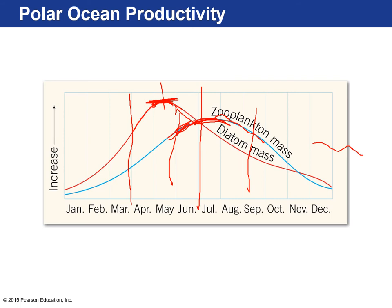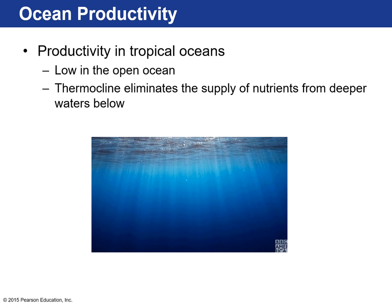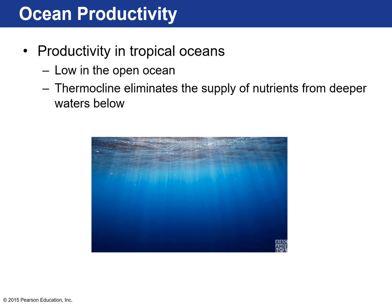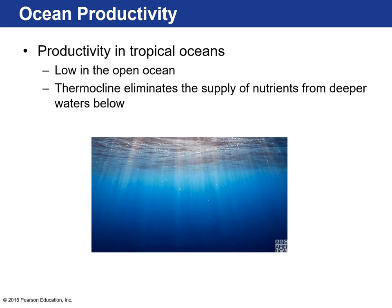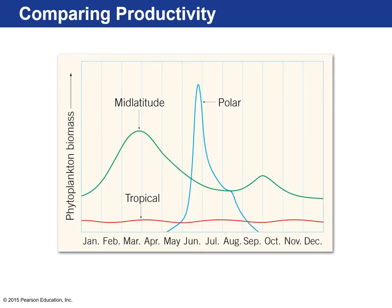Moving from polar oceans to tropical oceans — tropical oceans are not very productive. They have a lot of sunlight, but they're very nutrient poor. The thermocline acts as a mass of low-density water that prevents nutrients from the deep ocean from coming up to the surface. So in the open ocean at tropical areas, there's often very low productivity, and this remains low throughout the entire year because of the year-round presence of the thermocline.